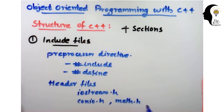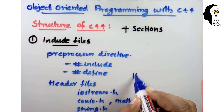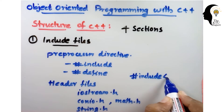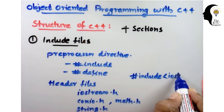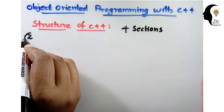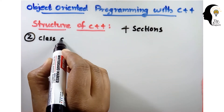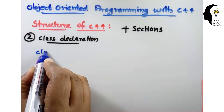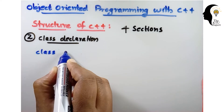If any string functions are used, we include string.h. We write it as: hash include iostream.h. The second section is class declaration, which contains the class keyword followed by the name of your class, then an opening brace.